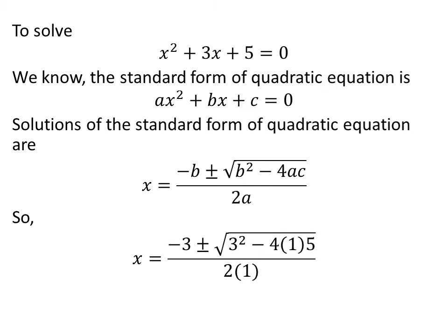So, application of the above fact gives us solutions of the quadratic equation x² + 3x + 5 = 0 are x = (-3 ± √(3² - 4(1)(5))) / (2(1)).